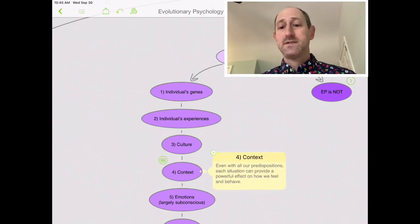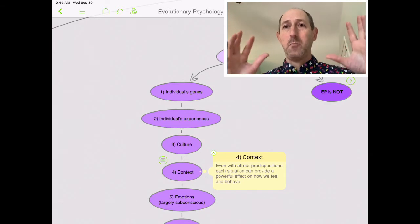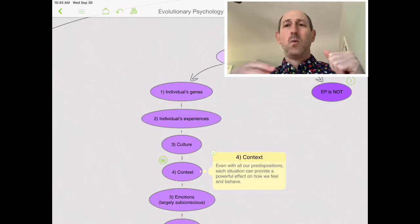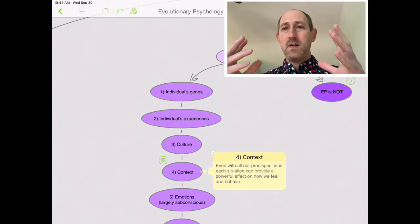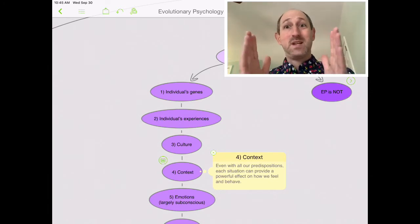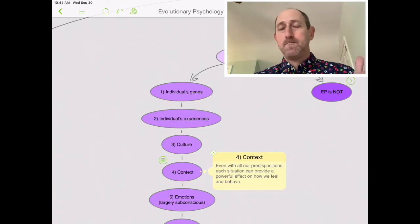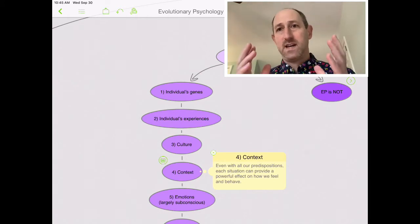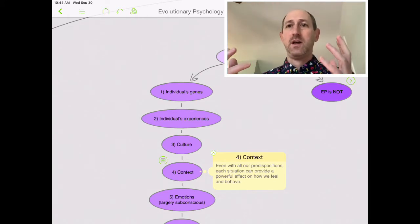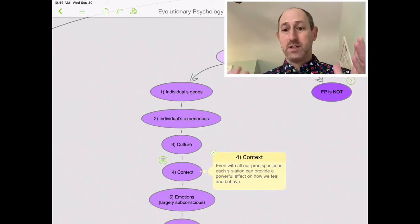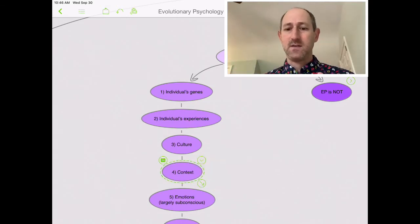Next would be context. Even with all of our predispositions, even if you say that they're kind of baked in, how we were raised, what society we grew up in, what our genes are, the fourth thing is in a particular context, we act differently. We can never discount context. It's a very strong influence on what we may do in any particular situation. There's a whole branch of psychology focused just on that. Usually, the context, that's where social psychology tends to focus.